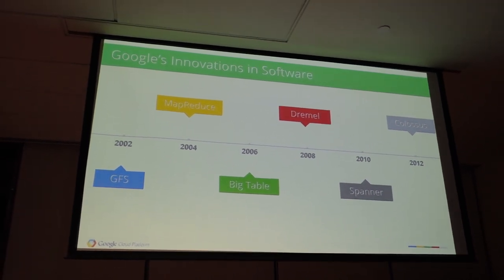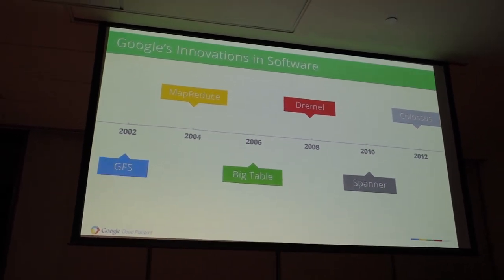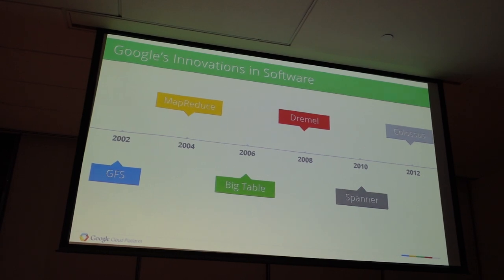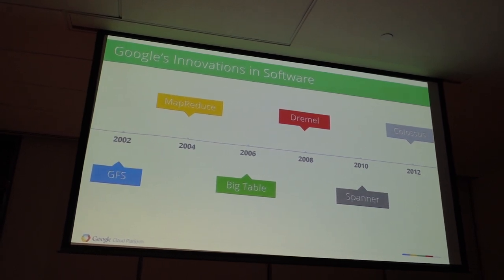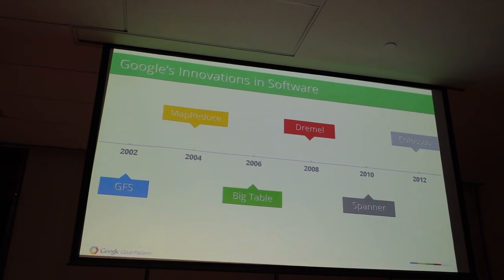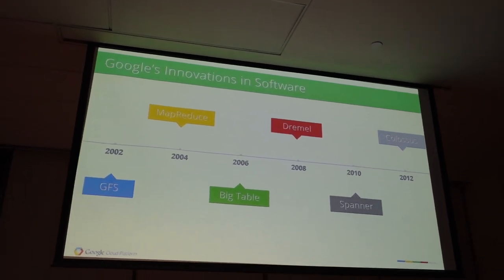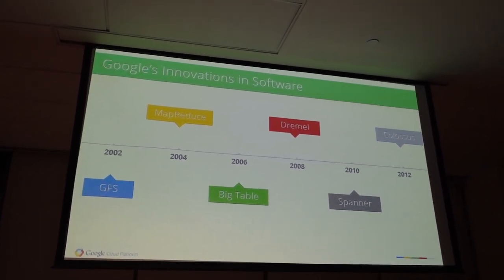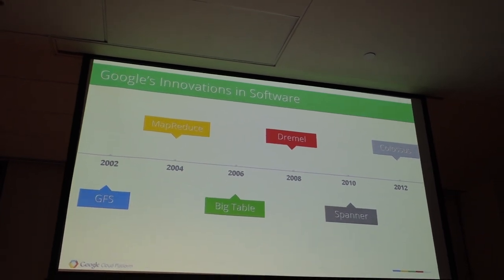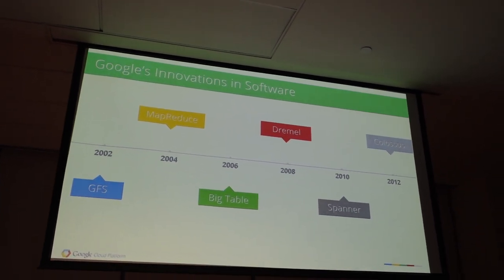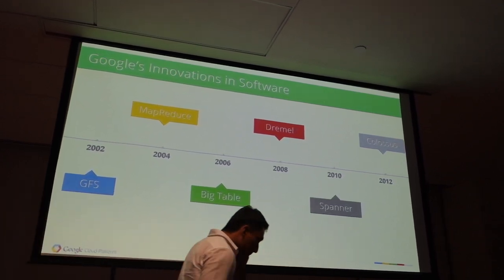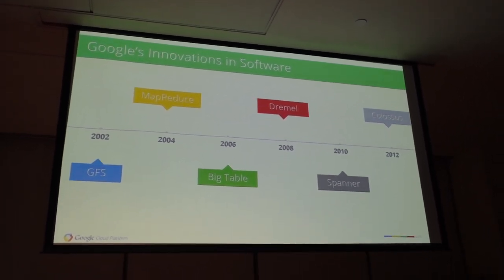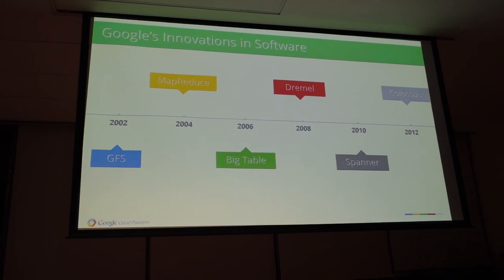In terms of software, we are very much a computer science company as well. When we first wanted to do search back in 2002, in order to do a search, we needed to make a copy of the internet. There was no technology that enabled us to do that, so we invented one and called it the Google File System, GFS for short. And once we did that, we needed a way to query this dataset, so we came up with MapReduce. We were able to publish white papers and share this with the community — for MapReduce, this led to the big data revolution. Hadoop is actually built off the MapReduce white papers. And there's also Dremel, a technology we use in-house for our big data analytics.